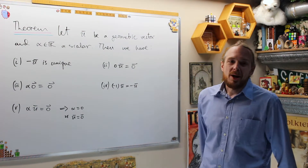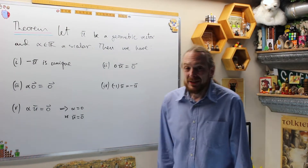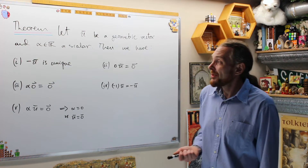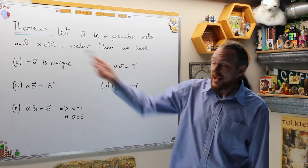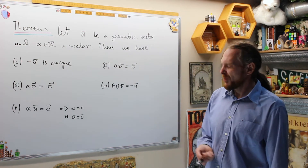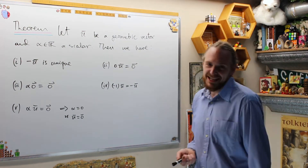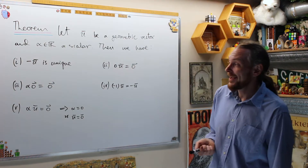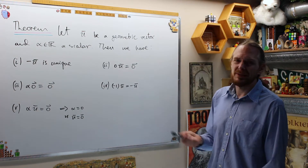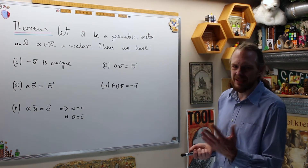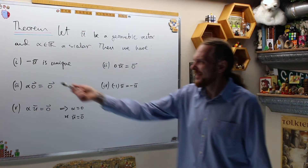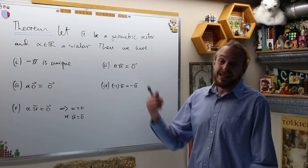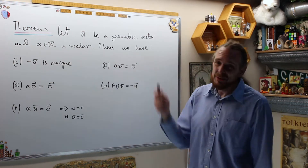Alright, further properties of geometric vectors. Let U be an arbitrary geometric vector and let alpha be an arbitrary scalar, which when we say a scalar we mean a real number. Then we have these five properties. First of all, the additive inverse or negative is unique.